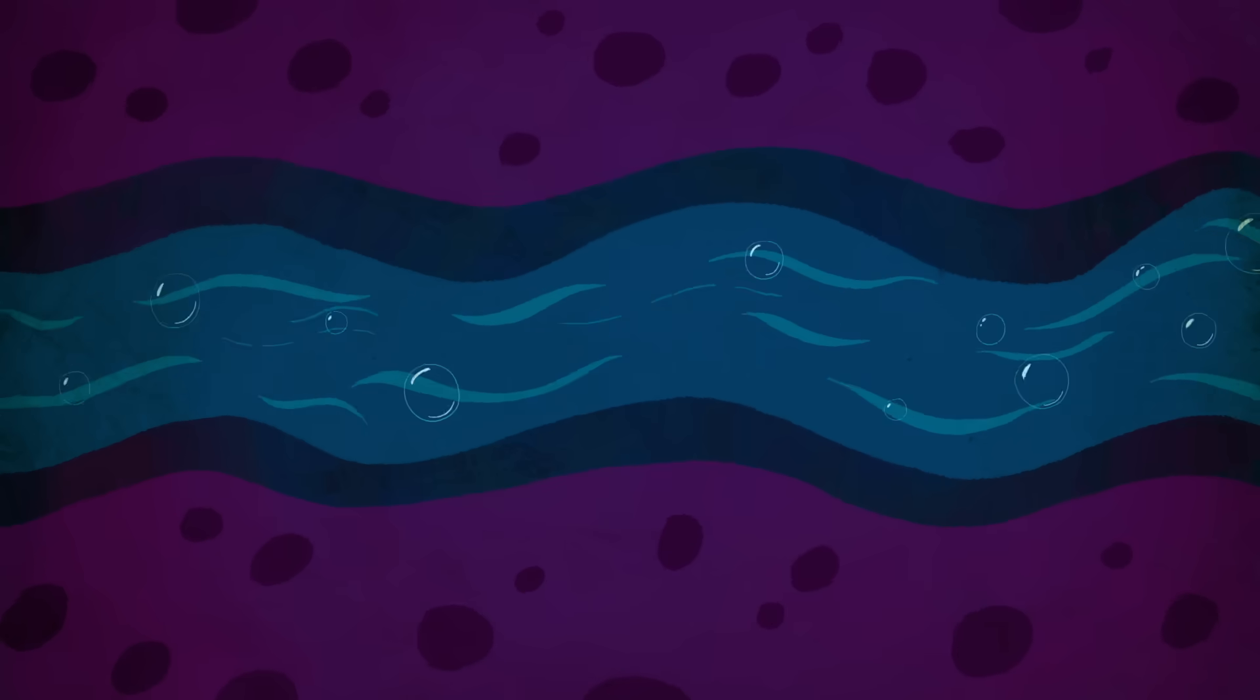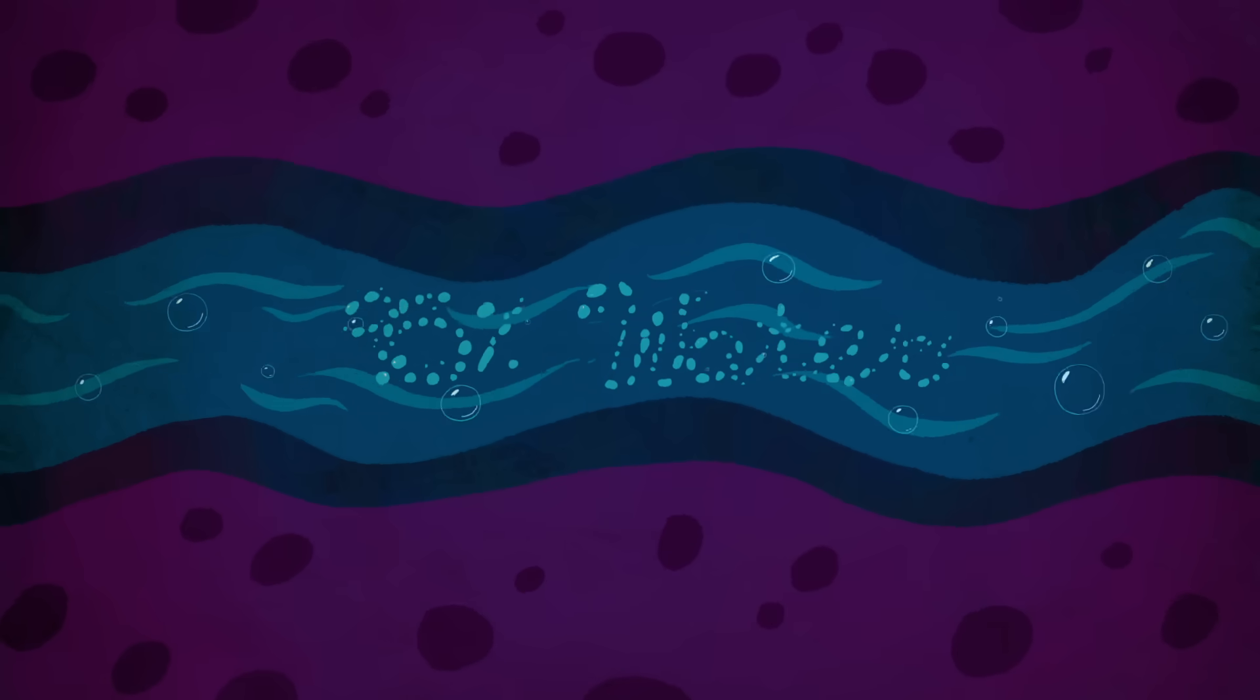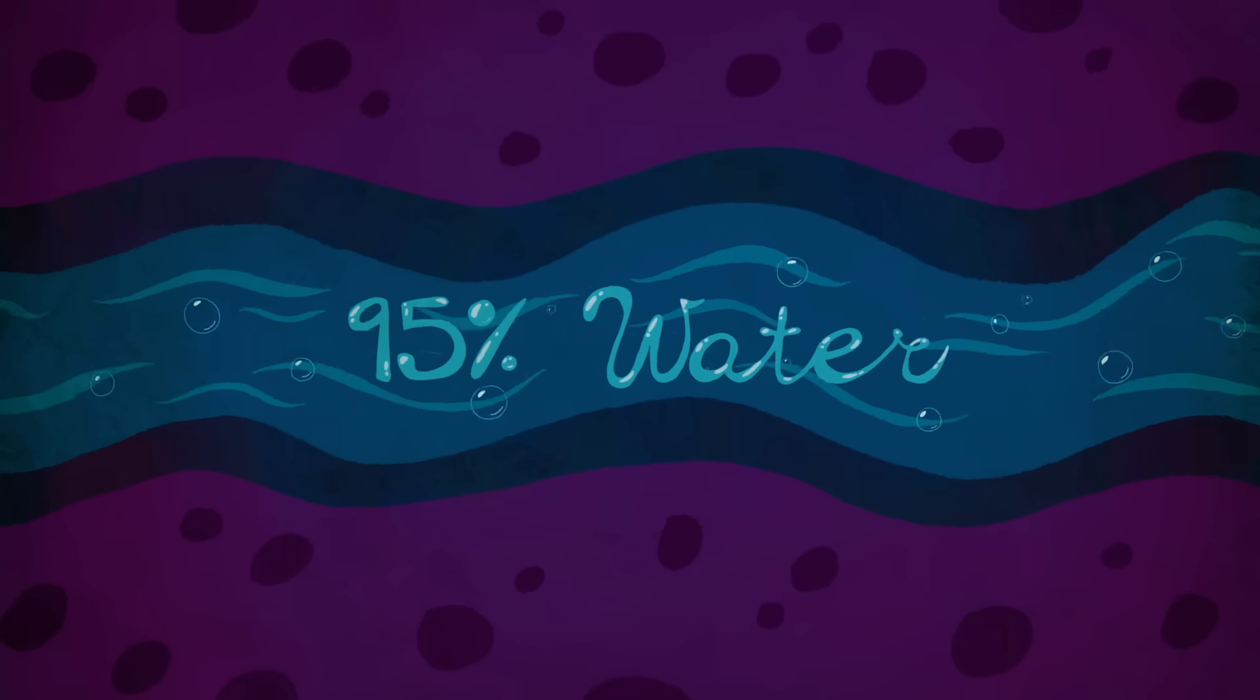A noted feature of jellyfish is a translucent bell made of a soft, delicate material called mesoglia. Sandwiched between two layers of skin, the mesoglia is more than 95% water, held together by protein fibers.